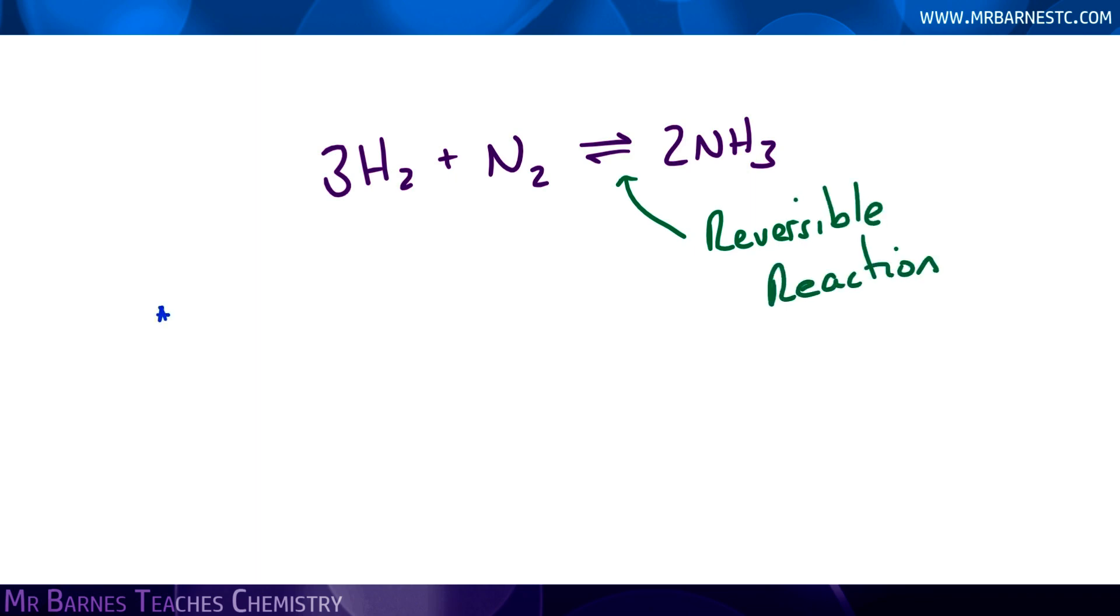What we mean by that is nitrogen and hydrogen are reacting together to make NH3, and NH3 ammonia is also reacting to make nitrogen and hydrogen. In other words, both reactions can occur.